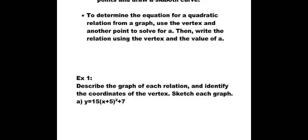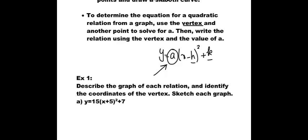There are cases where the graph of a quadratic is given and you're supposed to find the equation. To do that, use the graph to find the coordinates of the vertex, which gives h and k. The vertex form of a quadratic is y = a(x - h)² + k. From the graph, I can find k and h. To find a, look at the graph, find a point at the intersection of the grid lines, substitute its coordinates back into the equation, and solve for a.